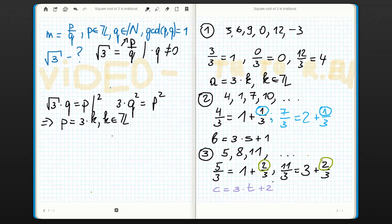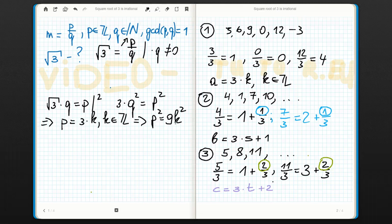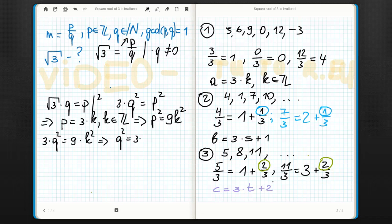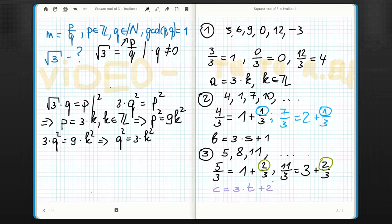But if p is 3k, then p squared is 9k squared. So we just substitute 9k squared instead of p squared, so we have 3 times q squared equals 9 times k squared, which means if we divide by 3, that q squared equals 3 times k squared.